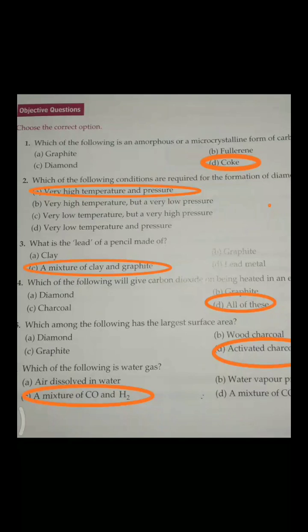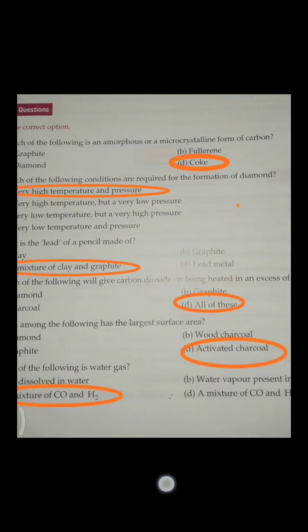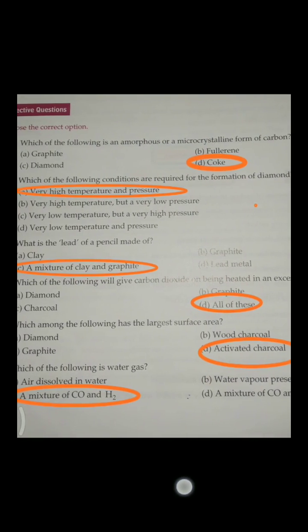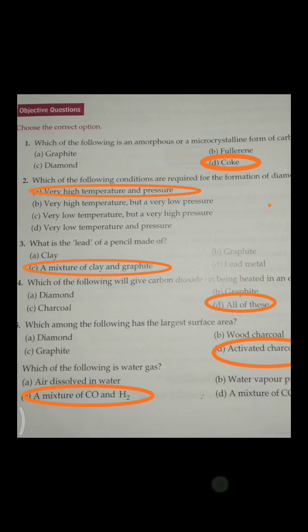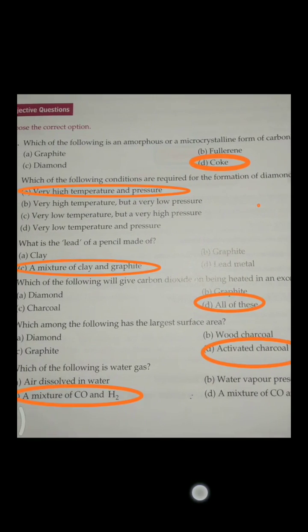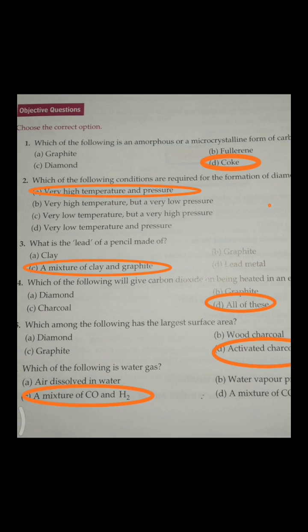Now we will start with the objective questions of chapter number 9. Which of the following is an amorphous or microcrystalline form of carbon? Correct answer is coke. Second, which of the following conditions are required for the formation of diamond? Very high temperature and pressure. Third, what is the lead of pencil made of? A mixture of clay and graphite.